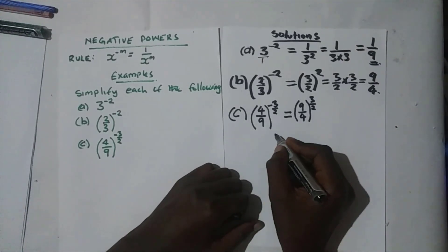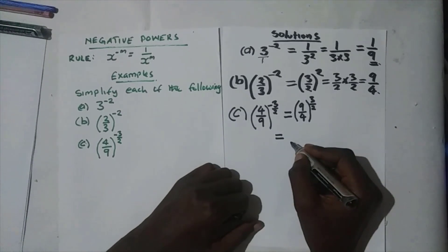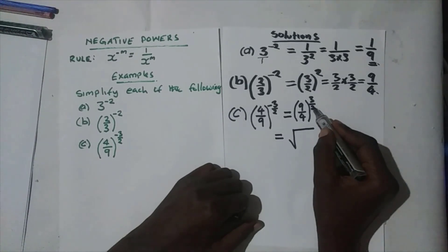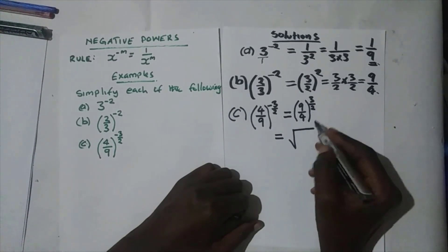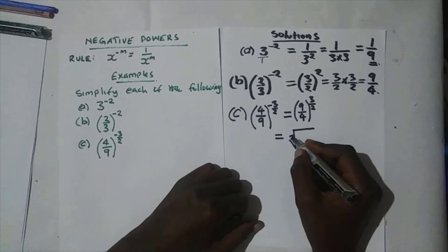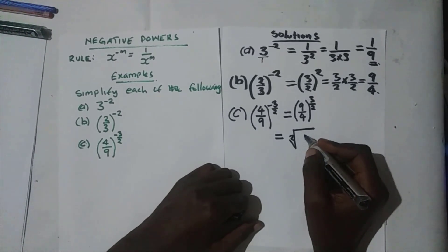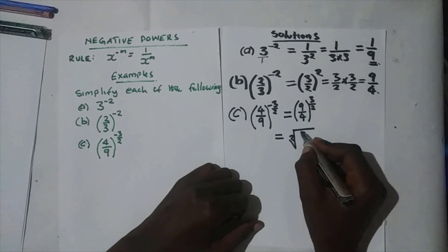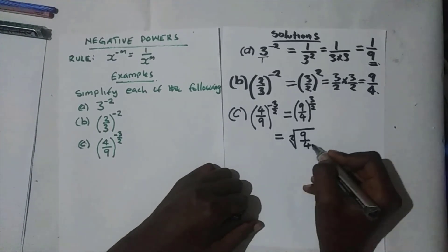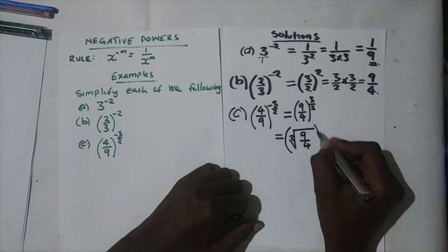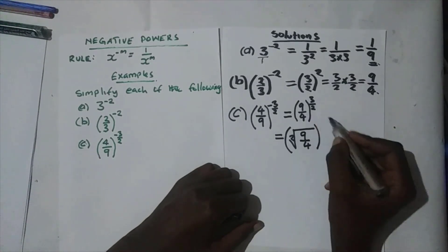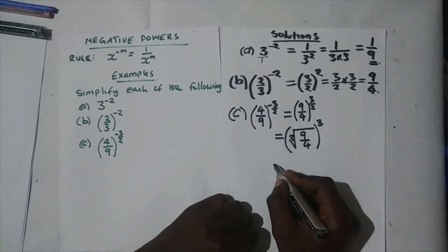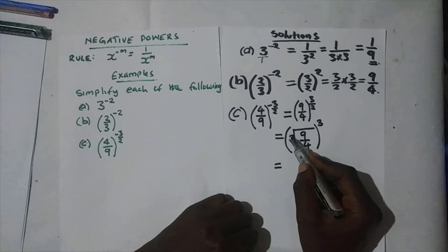When evaluating fractional powers, the first thing you do is introduce the radical sign. The number in the denominator of the power — the 2 — comes under the radical sign as the index. Normally when it's a 2 we don't write it, but here I will. The number in the brackets, nine over four, comes under the radical sign, and the 3 from the numerator of the power becomes the outer exponent.